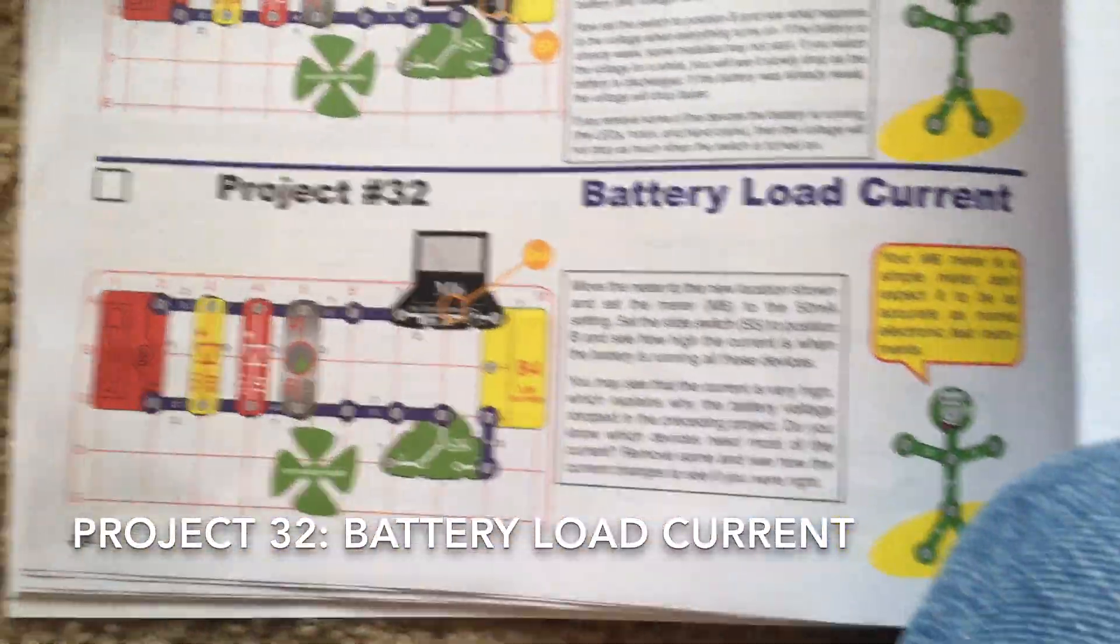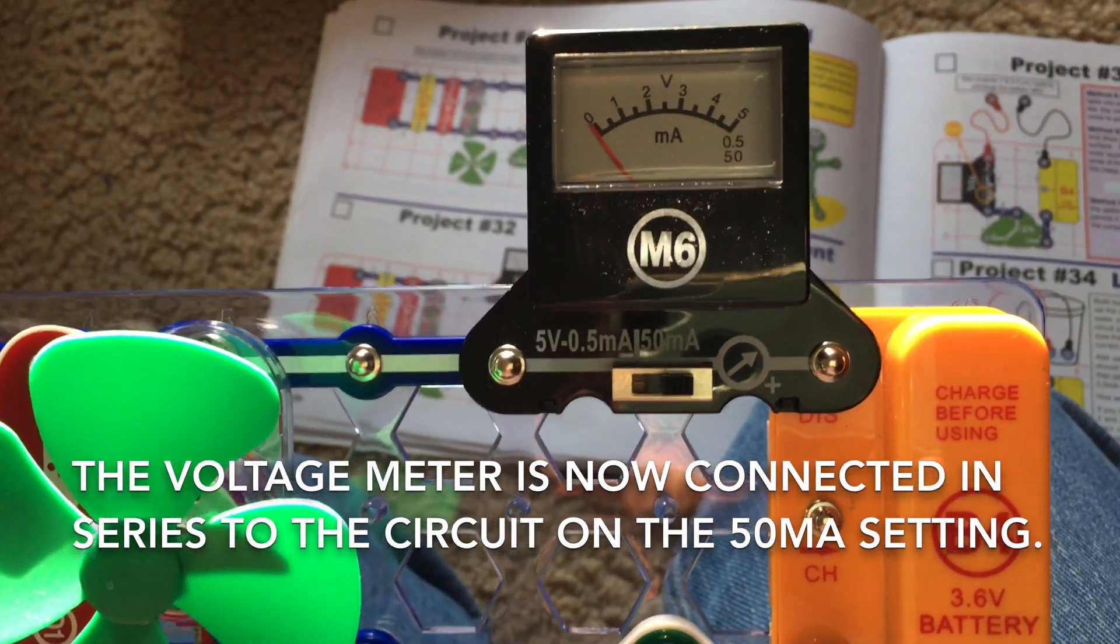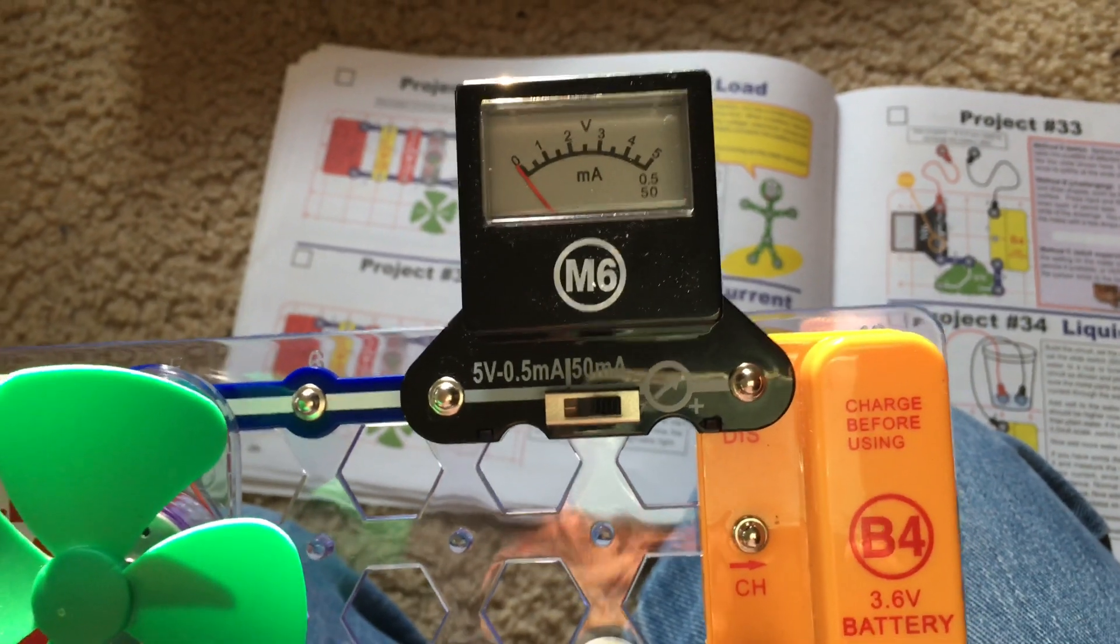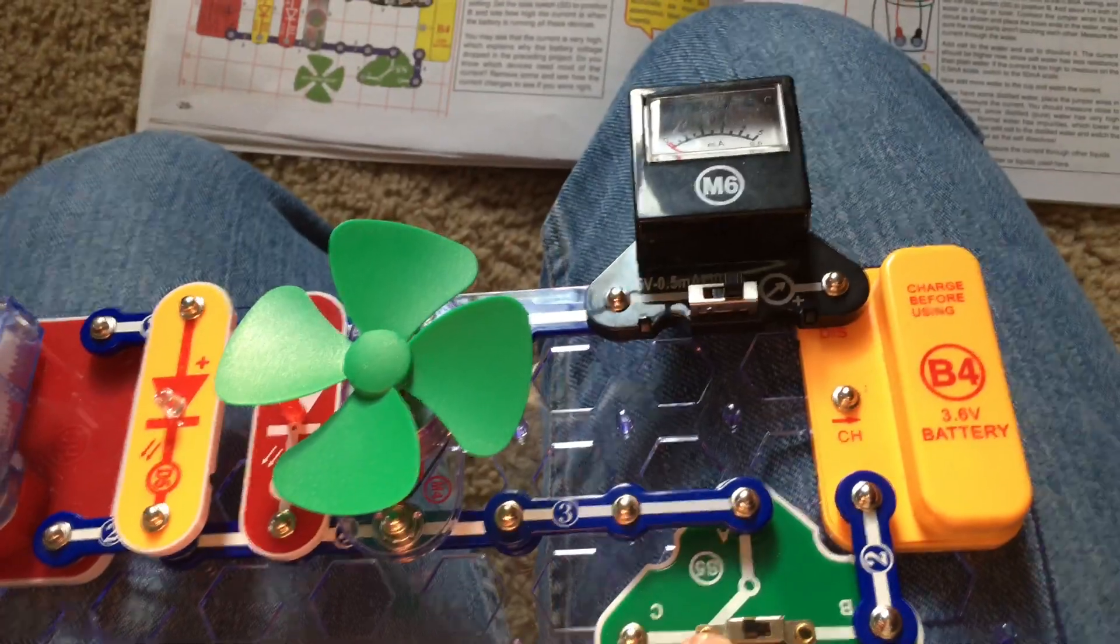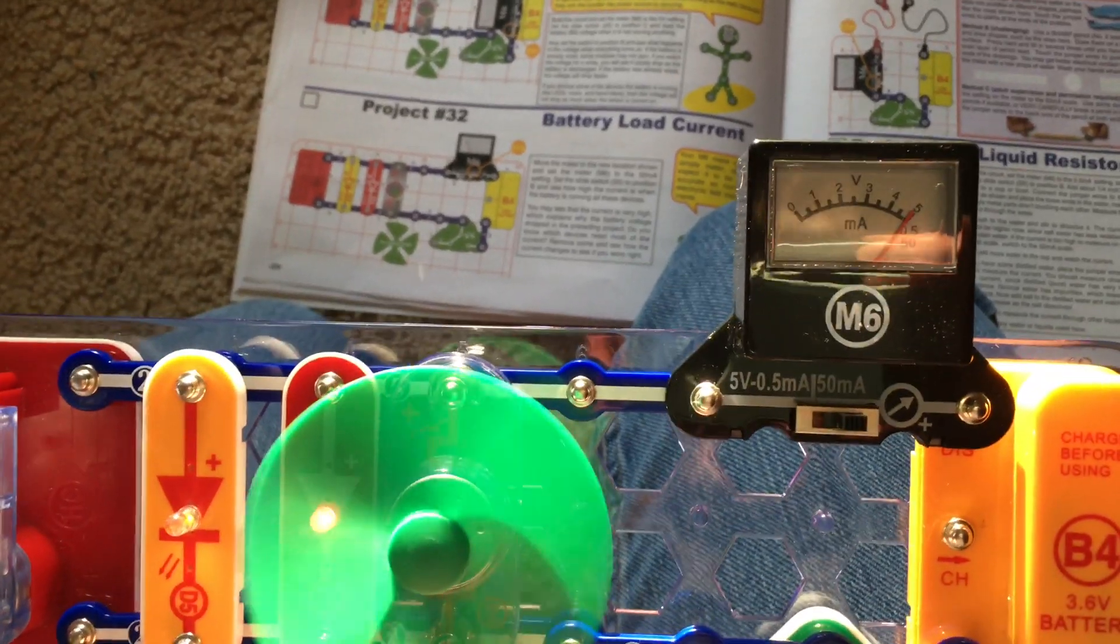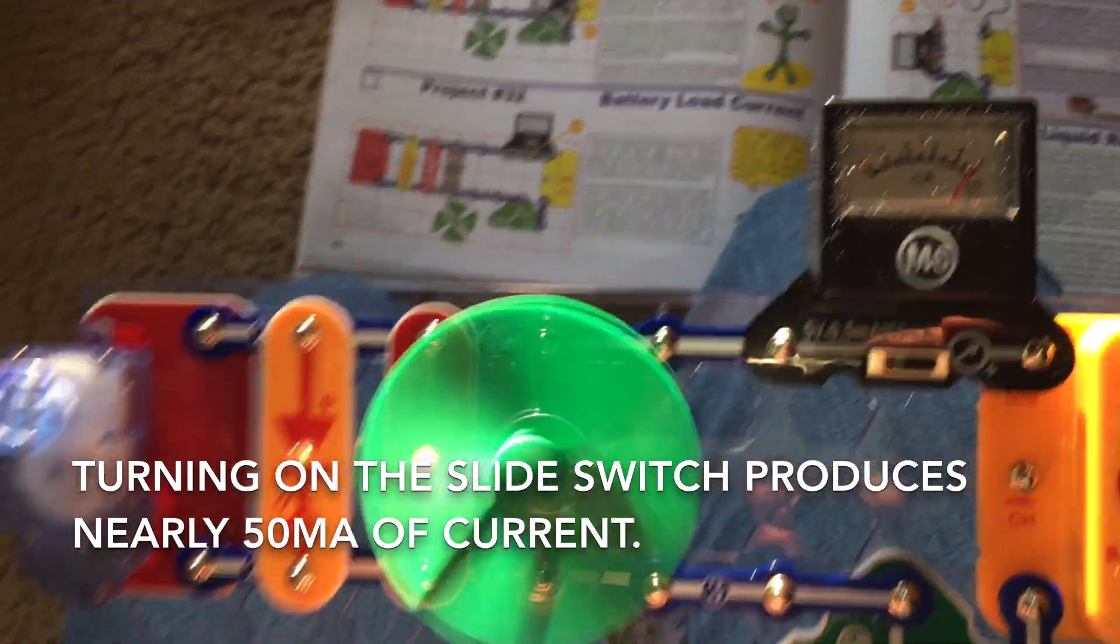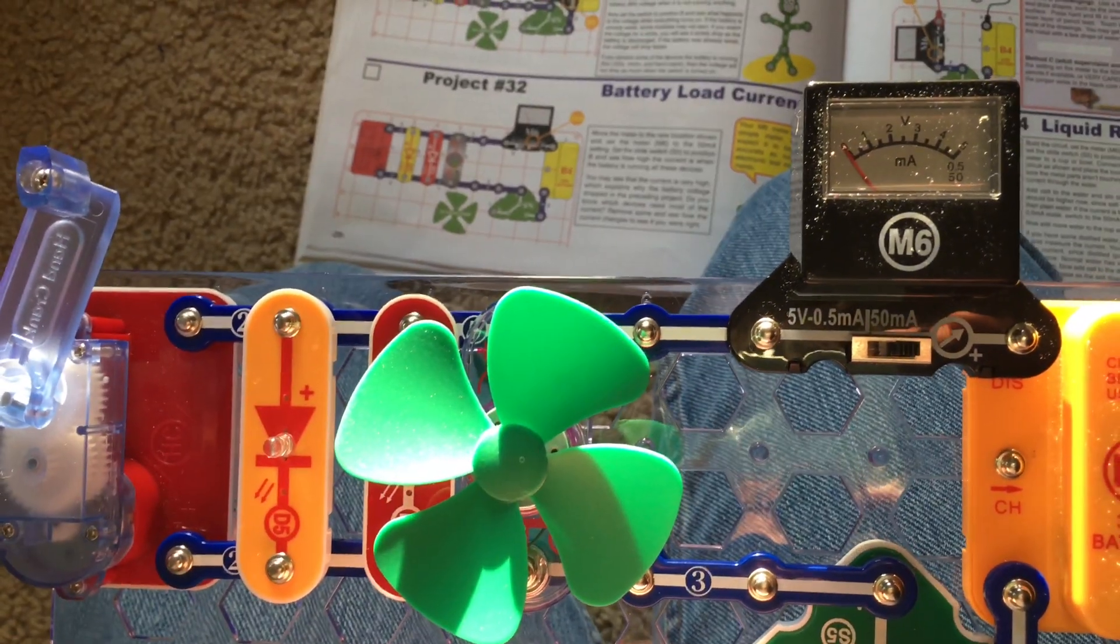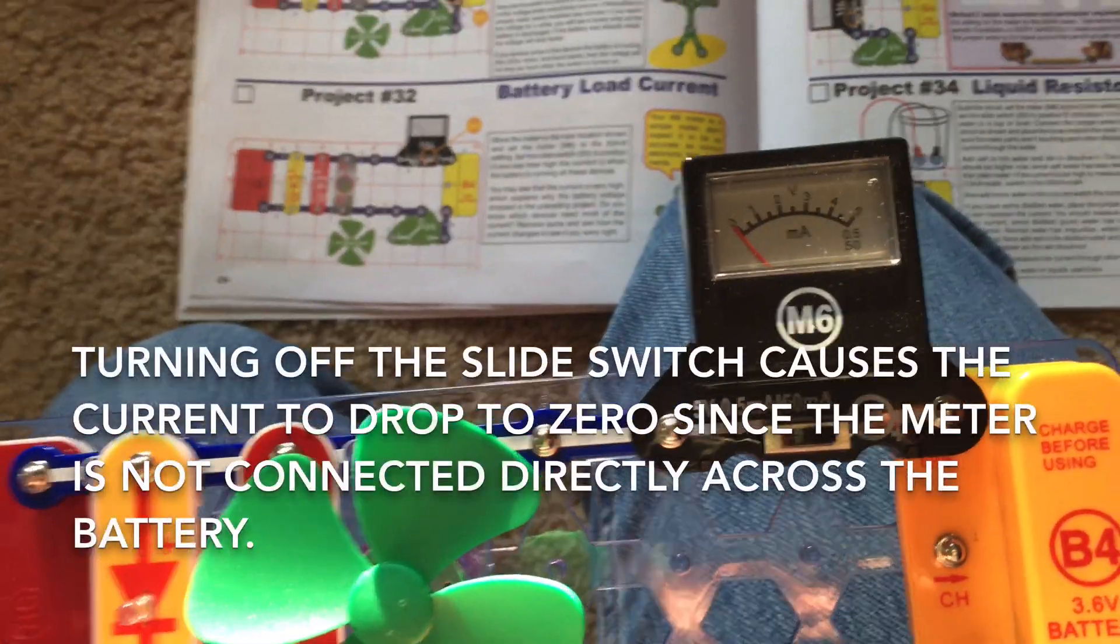The next project is similar to the previous one, but now we are testing the battery load current instead of the voltage. We move the voltage meter so that it is connected to the circuit instead of directly across the battery, and it's on the 50 milliamp setting. Now it's reading zero with the slide switch in the C position. When we turn on the slide switch to the B position, the current gets pretty high, almost 50 milliamps. When I turn it off, the current goes back to zero.